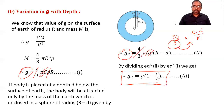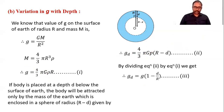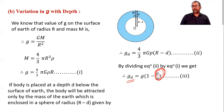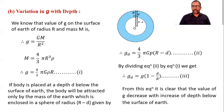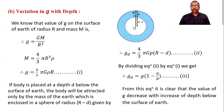By this equation we write the conclusion: as depth d increases, the factor (1 − d/R) decreases, so g_d decreases. The value of g decreases with increase in depth below the surface of Earth. So we have covered two articles: as height increases, g decreases; and as depth increases, g also decreases.